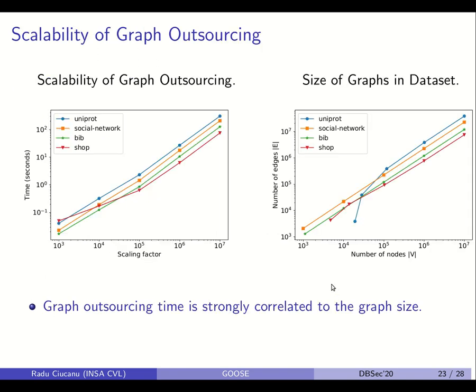For graph outsourcing, as confirmed by our theoretical analysis, the time is linear in the size of the input. We confirmed this experimentally: the largest graphs with ~10 million nodes and tens of millions of edges took on the order of minutes to outsource. If one graph has more edges than another, the outsourcing time is proportionally larger — confirming that graph outsourcing time is strongly correlated to graph size.